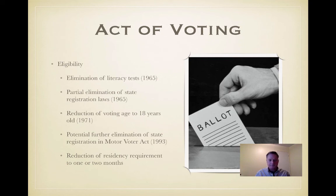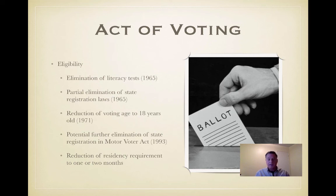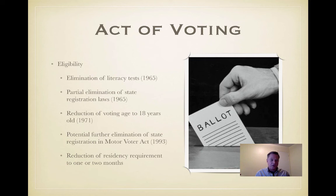There was also a reduction of residence requirements to one or two months. In California, about two weeks before the election there's a small window where you can no longer register to vote. In some states, you could literally move in on Election Day and register to vote. The very first restriction to go was actually the elimination of any religious requirement, which was eliminated by state legislatures in the 1790s.